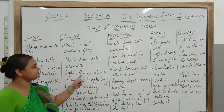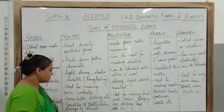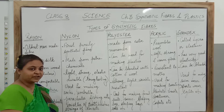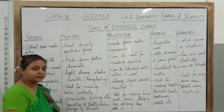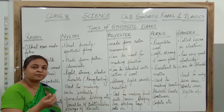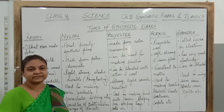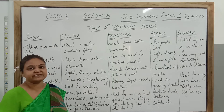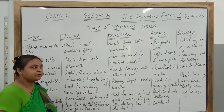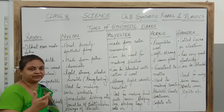Nylon is light, strong, elastic, and durable. It is used for making socks, umbrellas, and parachutes because it is lightweight. Fishing nets are made of nylon. The bristles of your toothbrushes are made from nylon. The nets of tennis and badminton rackets are also made from nylon because it is very strong and lightweight.